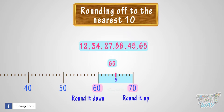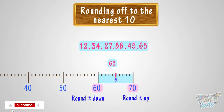Here, 65 is midway between 60 and 70, or it is on the 5 mark. What do we do now? 65 is 5 numbers away from 60 and 5 numbers away from 70. Here we have a simple rule: whenever a number is on the 5 mark, we always round it up.